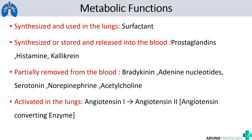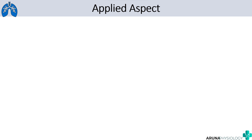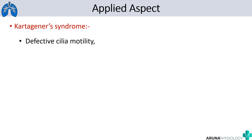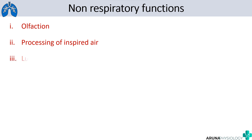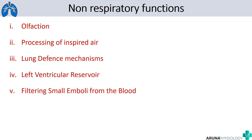To finish, as an applied aspect you can write about Kartagener's syndrome. This is a genetic defect in which the axonemal dynein is affected, causing defective ciliary motility. As a result, the mucociliary escalator action does not take place, and these patients suffer from recurrent lung infections. To summarize, the six non-respiratory functions of the lung are: olfaction, processing of inspired air, lung defense mechanisms, left ventricular reservoir, filtering small emboli from the blood, and metabolic functions.